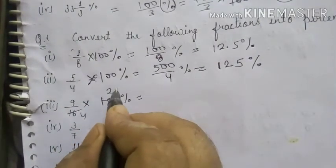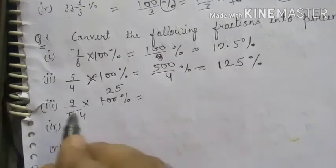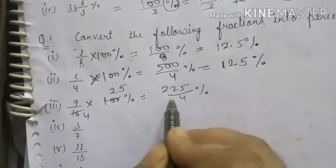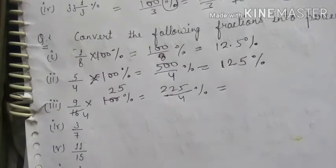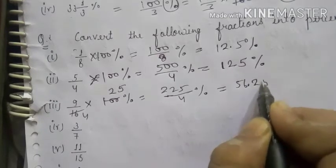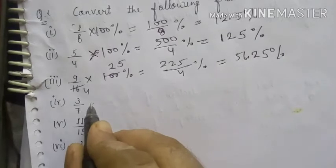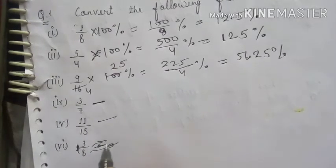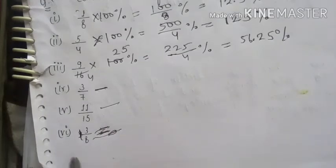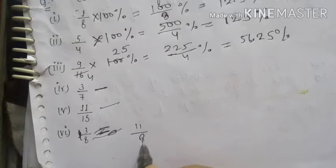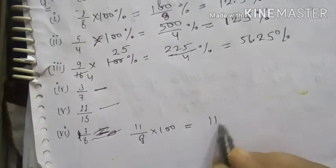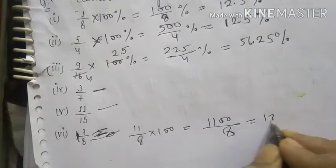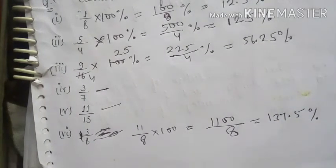Continuing: 9 upon 16 gives 225 upon 4 percent, which equals 56.25%. For 3 upon 7, do this yourself. For 1 whole 3 upon 8: convert to improper fraction — 8+3 = 11 upon 8. Multiply by 100 to get 1100 upon 8. Dividing gives 137.5%. Now move to question 3.